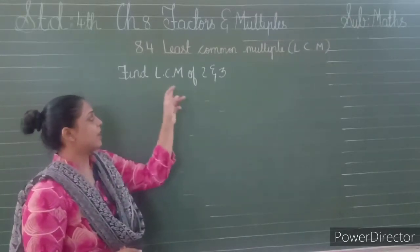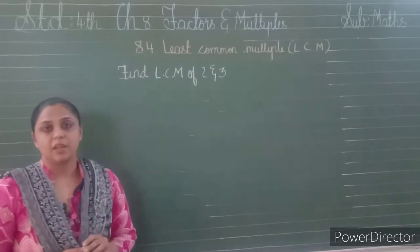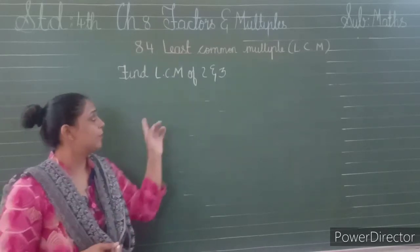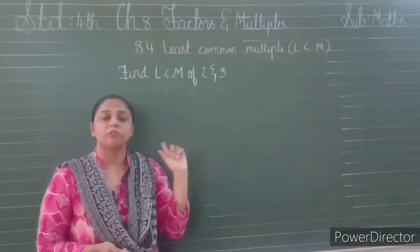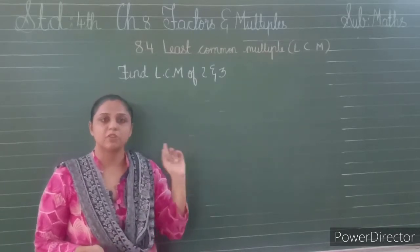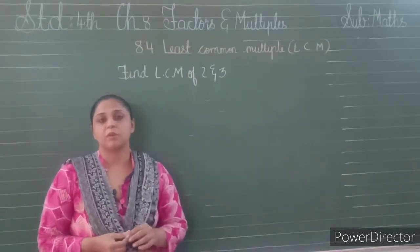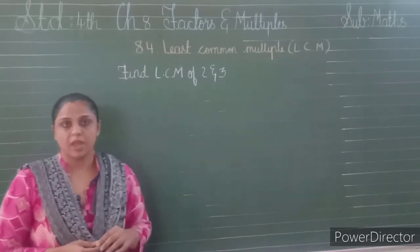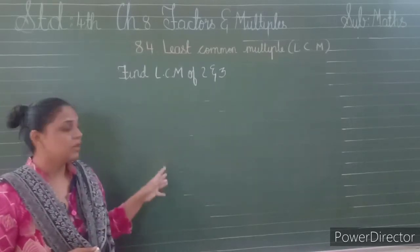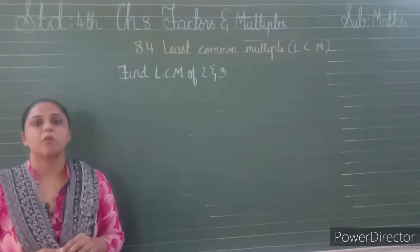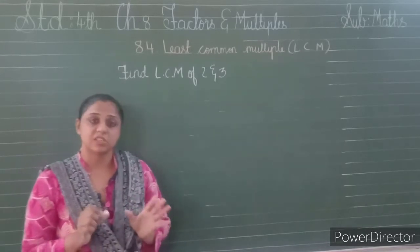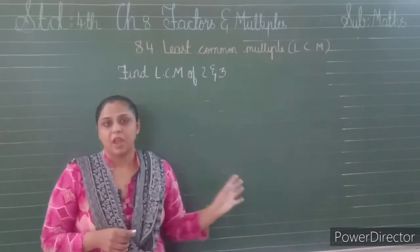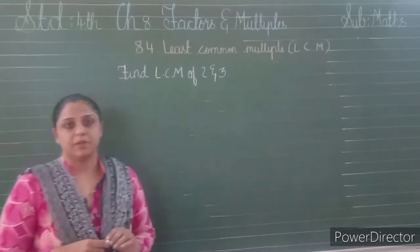Here it is given: find out the LCM of 2 and 3. So what we have to do — first of all find out the multiples of 2, then find out the multiples of 3. After finding out both numbers' multiples, we have to find out the common multiples. And then we have to find out which is the least common multiple.